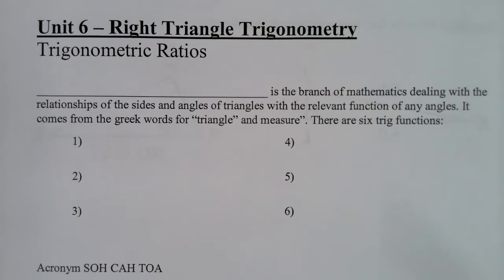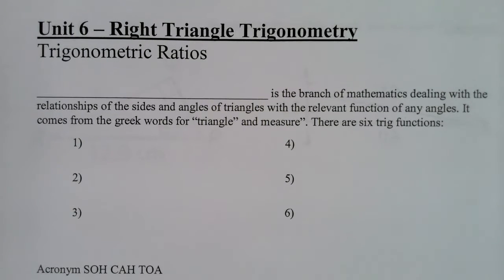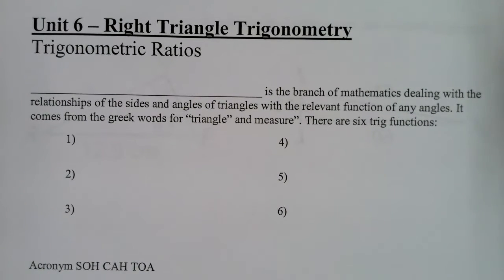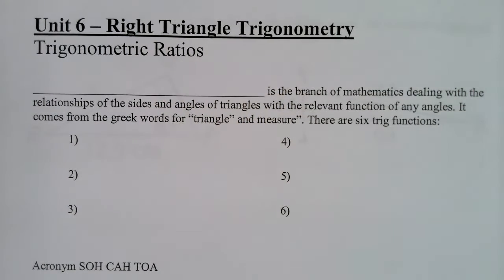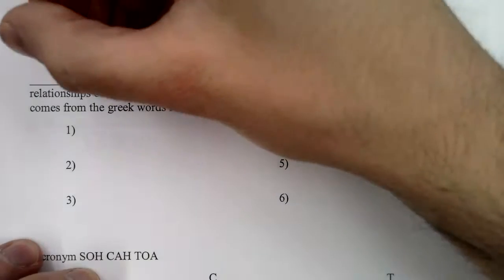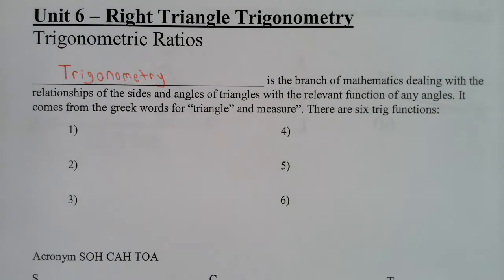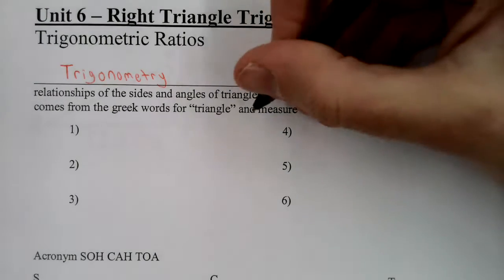This is the next lesson in geometry called trigonometric ratios. The unit is called right triangle trigonometry, and we have not done any trigonometry yet — but that changes now. Trigonometry is the branch of mathematics dealing with the relationships of the sides and angles of triangles with the relevant functions of any angles. It comes from the Greek words for triangle and measure.